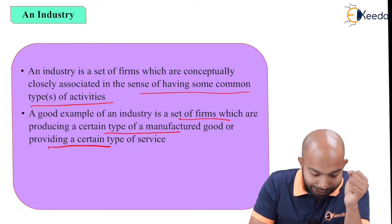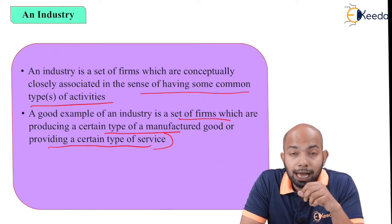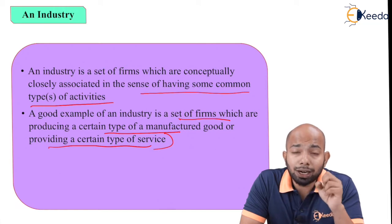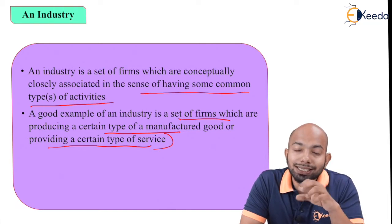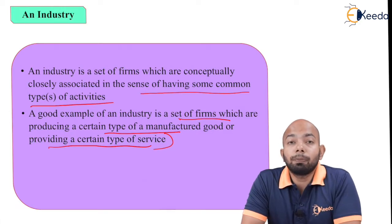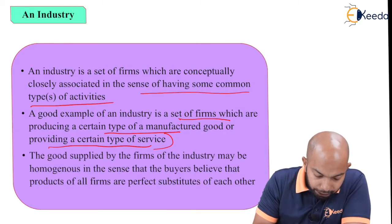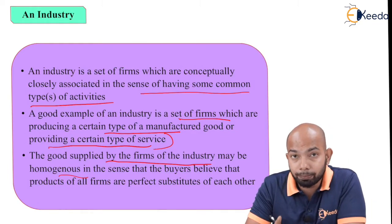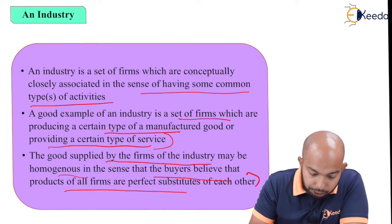A good example of an industry is a set of firms which are producing certain types of manufactured goods or providing certain types of services. Where there are different firms selling out certain goods and services, that compilation can be called an industry. The goods supplied by the firms of an industry may be homogeneous — meaning common — such as tires.